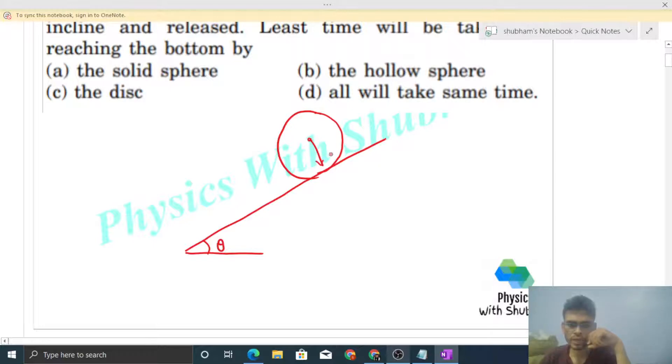You can directly write the components like mg cos theta perpendicular to this inclined plane and parallel to the inclined plane that will be mg sin theta, right? And there will be normal reaction from the surface to balance mg cos theta.